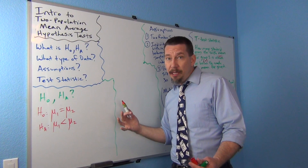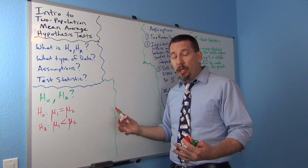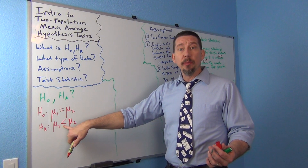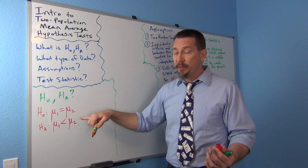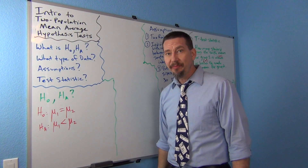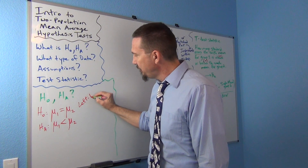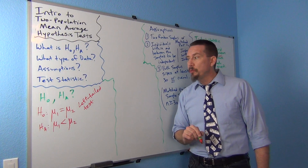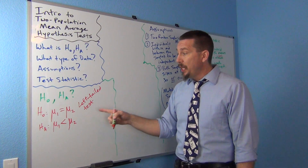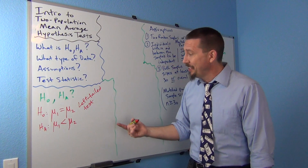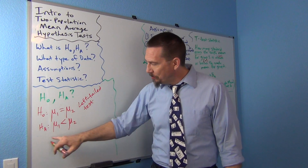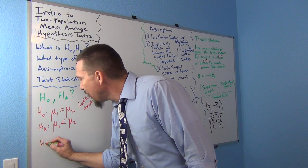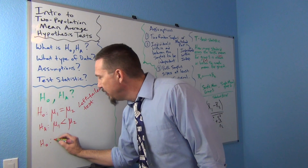It's good to know what the claim is and what type of test this is. The alternative hypothesis always tells you the type of test — if HA is less than, it looks like an arrow pointing left, so that's a left-tailed test. Just like two population proportion tests, this can be written in different ways. They subtract mu2 from both sides, giving another way of writing the null and alternative hypothesis.